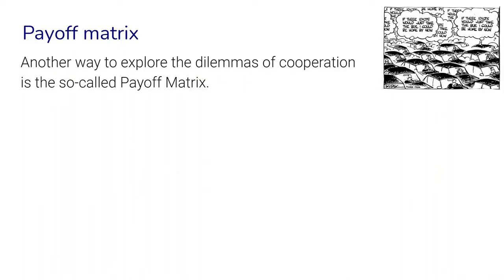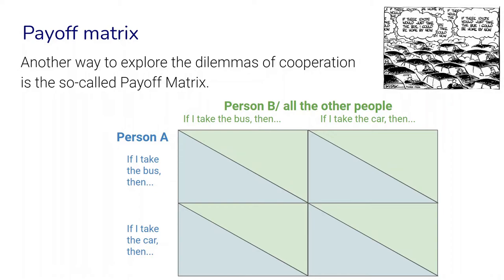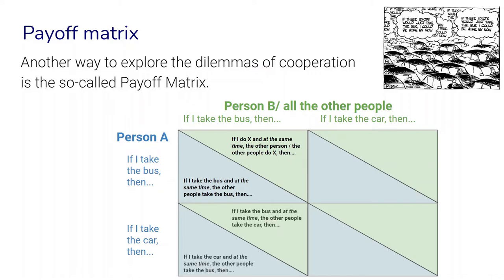Another concept or teaching tool you can explore is a so-called payoff matrix. It is a way for us to think about when people are in a situation where they have to make a decision about how to behave — what might be their motivations and what outcomes does it create. For example, last week we introduced the situation of a traffic jam where everybody is taking the car and nobody is taking the bus. A payoff matrix can help us better understand the motivations that lead to this outcome — for instance, if person A decides to take the bus and person B or others decide to take the bus, or if one person decides to take the car but others decide to take the bus.